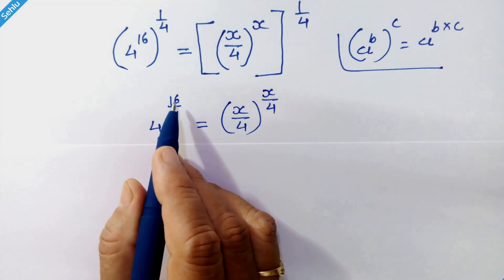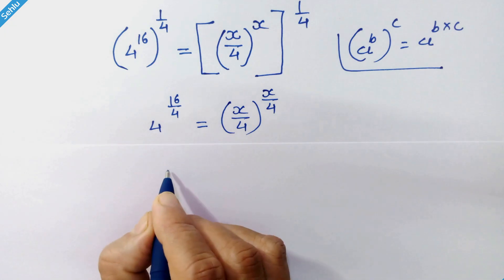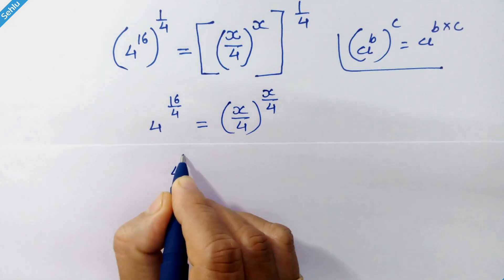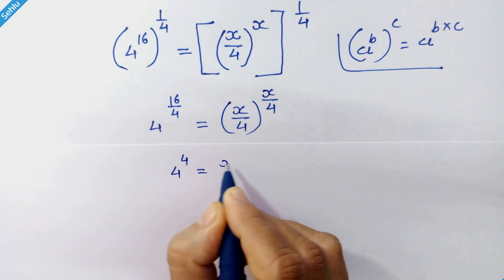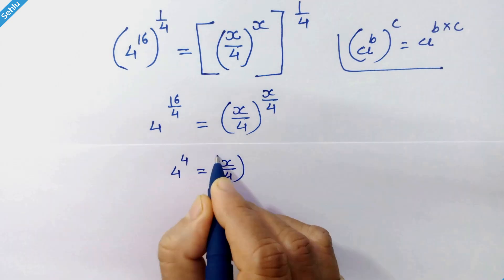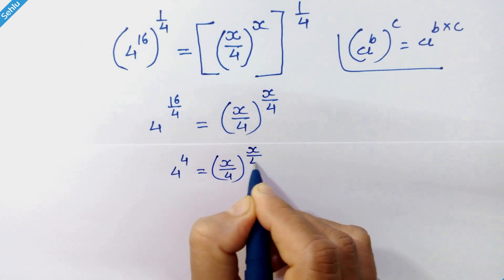16 over 4 is 4, so we can write 4 raised to 4 equals x over 4, whole raised to x over 4.